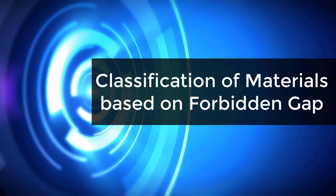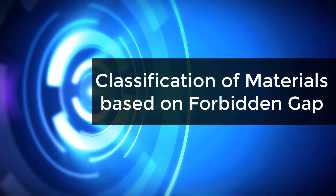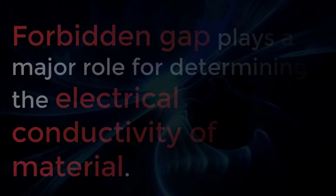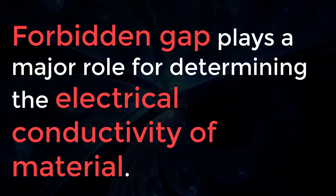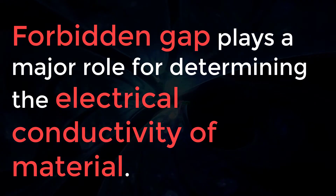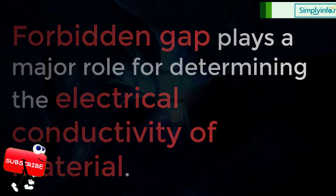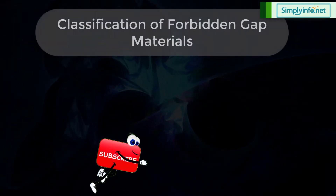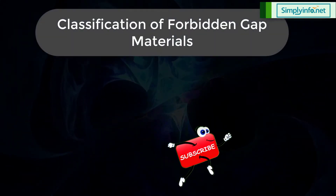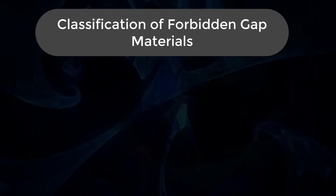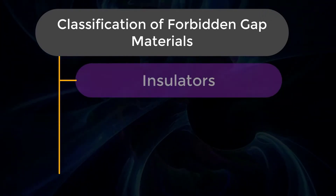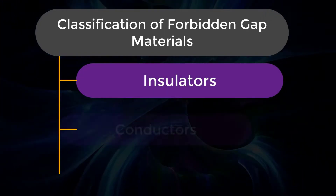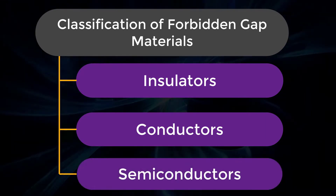Classification of Materials Based on Forbidden Gap. The forbidden gap plays a major role in determining the electrical conductivity of materials. Based on the forbidden gap, materials are classified into three types: insulators, conductors, and semiconductors.